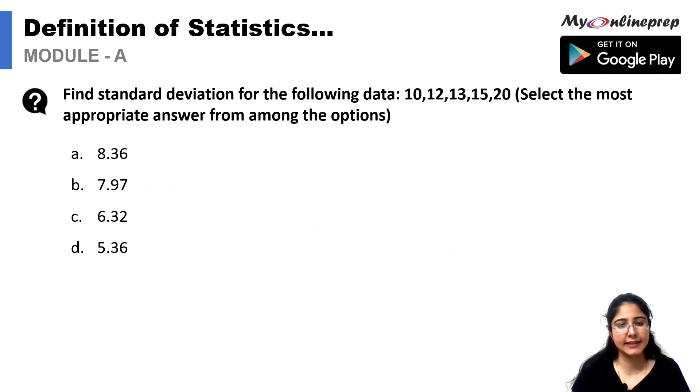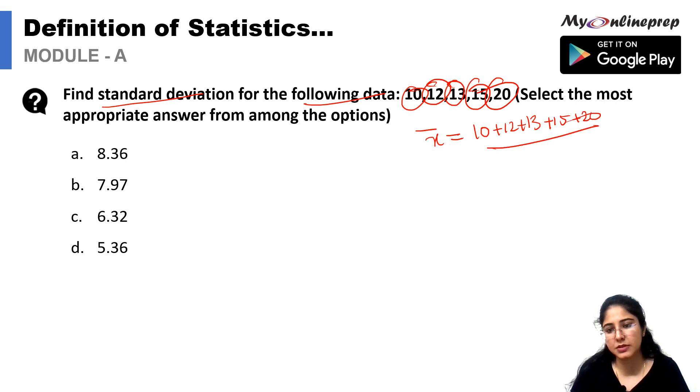Here we have to find the standard deviation for the following data: 10, 12, 13, 15, and 20. First of all we have to calculate mean, that would be 10 plus 12 plus 13 plus 15 plus 20 divided by number of observations which is 5. This equals 14. Also we have x and f series given, so we have to calculate summation x square. This is 1, 2, 3, 4, and 5. F we have is 10, 12, 13, 15, and 20.